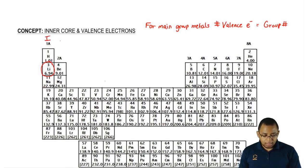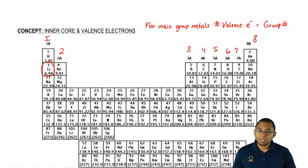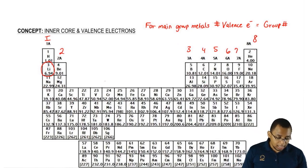These guys would have one valence, these guys would have two valence, three valence, four valence, five, six, seven, and eight valence electrons, except for helium. Helium would have two valence electrons.